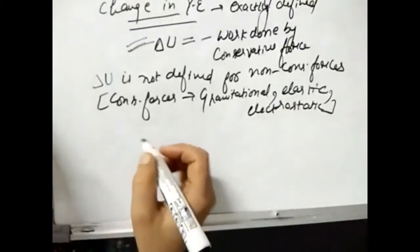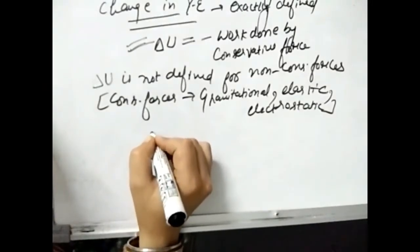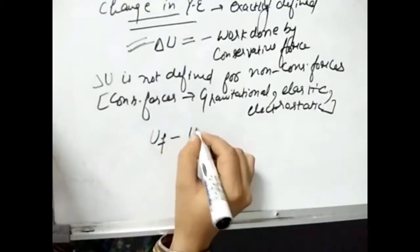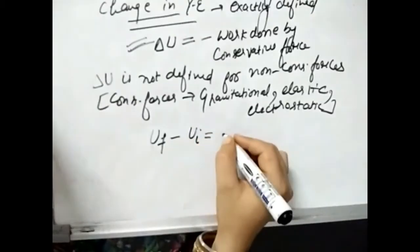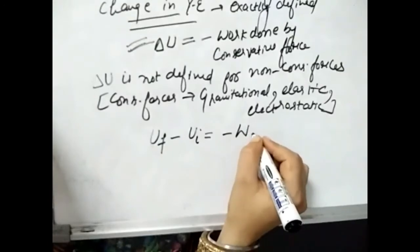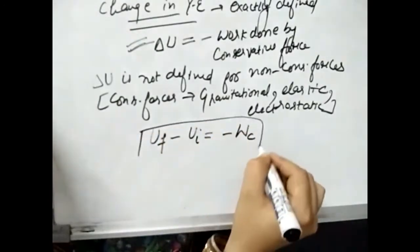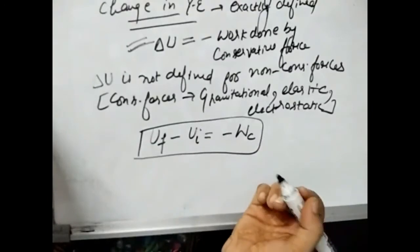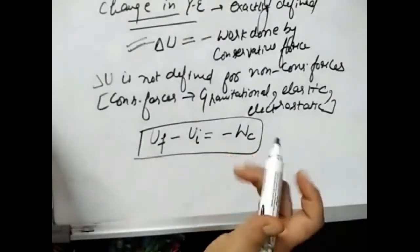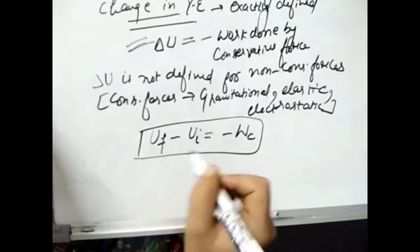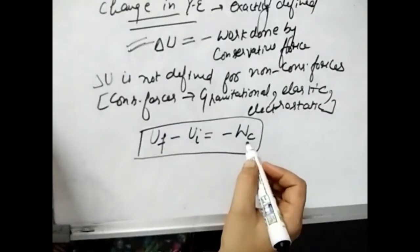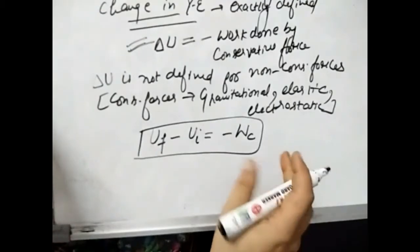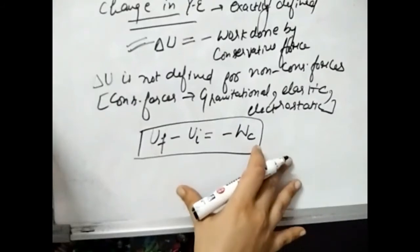Change in potential energy को हम इस तरह भी लिख सकते हैं: potential energy final minus potential energy initial equals to negative of work done by conservative forces. Change in potential energy का मतलब final में क्या था minus initial क्या था — so Uf minus Ui = -Wc.